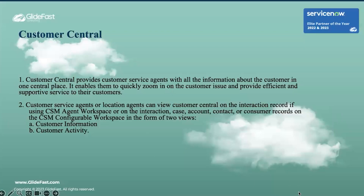Today we are going to discuss about Customer Central. It provides customer service agents with all information of customers in one central place. If agents are using agent workspace, they can view Customer Central on interaction records. If they are using configurable workspace, they can see Customer Central on interactions, case, accounts, contacts, or consumer records. This can be viewed in two tabs: customer information and customer activity.